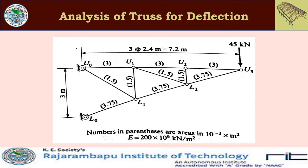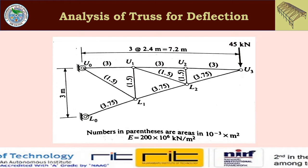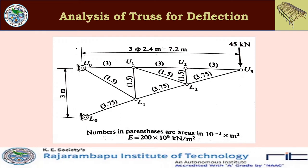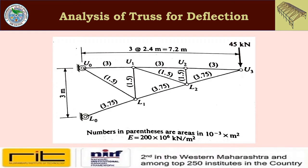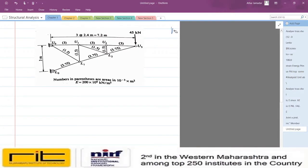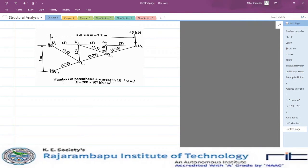In a cantilever truss with hinged supports, the bottom support (L0) has one horizontal reaction and one vertical reaction, while the top support (U0) has only a horizontal reaction — no vertical reaction. We need to analyze this truss for vertical deflection at point U3. This problem is taken from C.K. Wang's 'Intermediate Structural Analysis'.